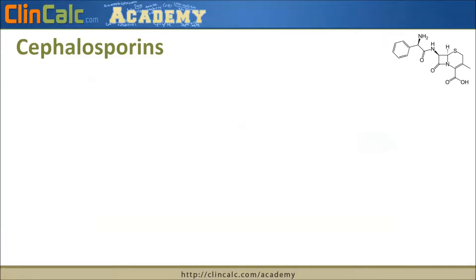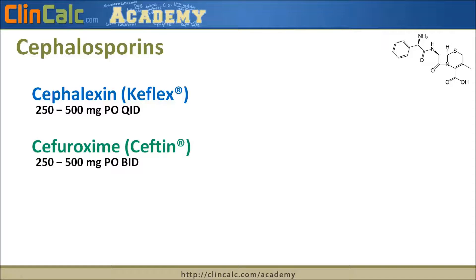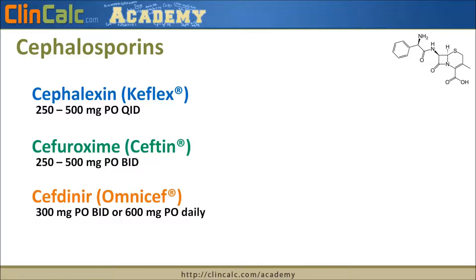The other common beta-lactam drug class are the cephalosporins. The three to focus on are cephalexin, brand name Keflex, taken four times a day; cefuroxime, brand name Ceftin, twice a day; and cefdinir, brand name Omnicef, which can be taken twice a day or even once daily. The chemical structure of these cephalosporins is a house with a basement, with the garage attached.